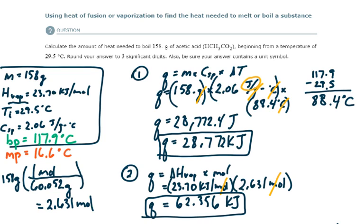To get the total amount of heat needed to do these two steps, I add them together. So 62.356 plus 28.772 gives me a total heat requirement of 91.128 kilojoules. Let's round that to three significant digits: 91.1 kilojoules, and that's my final answer.